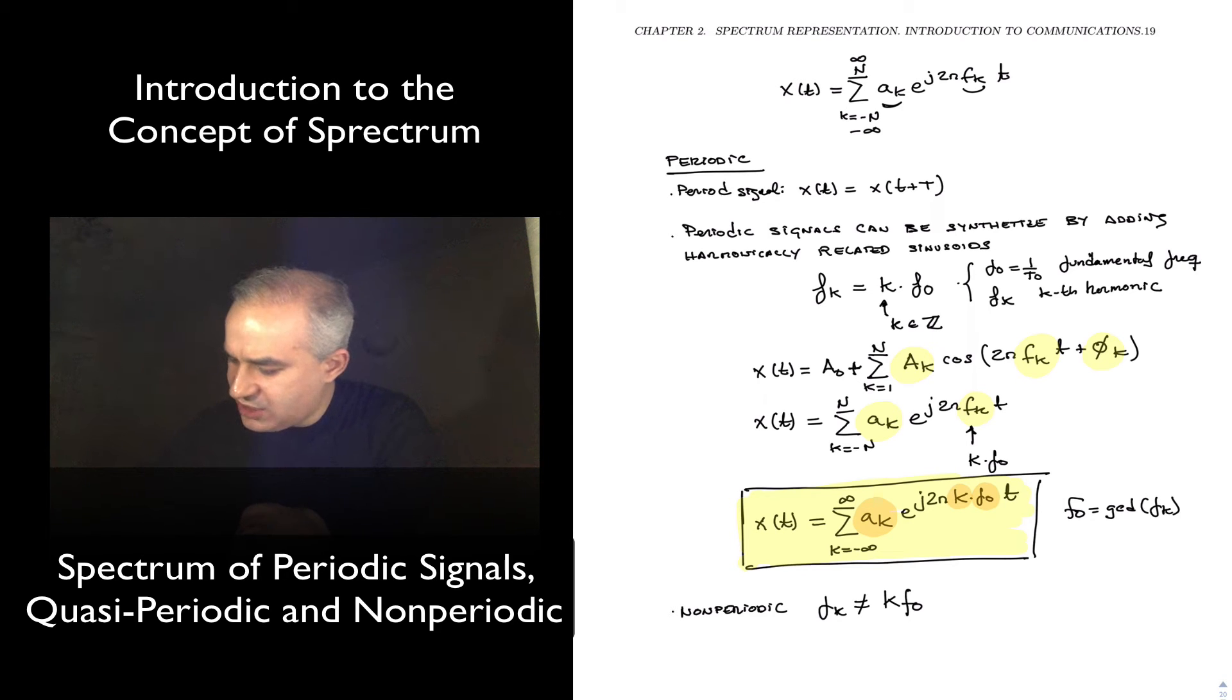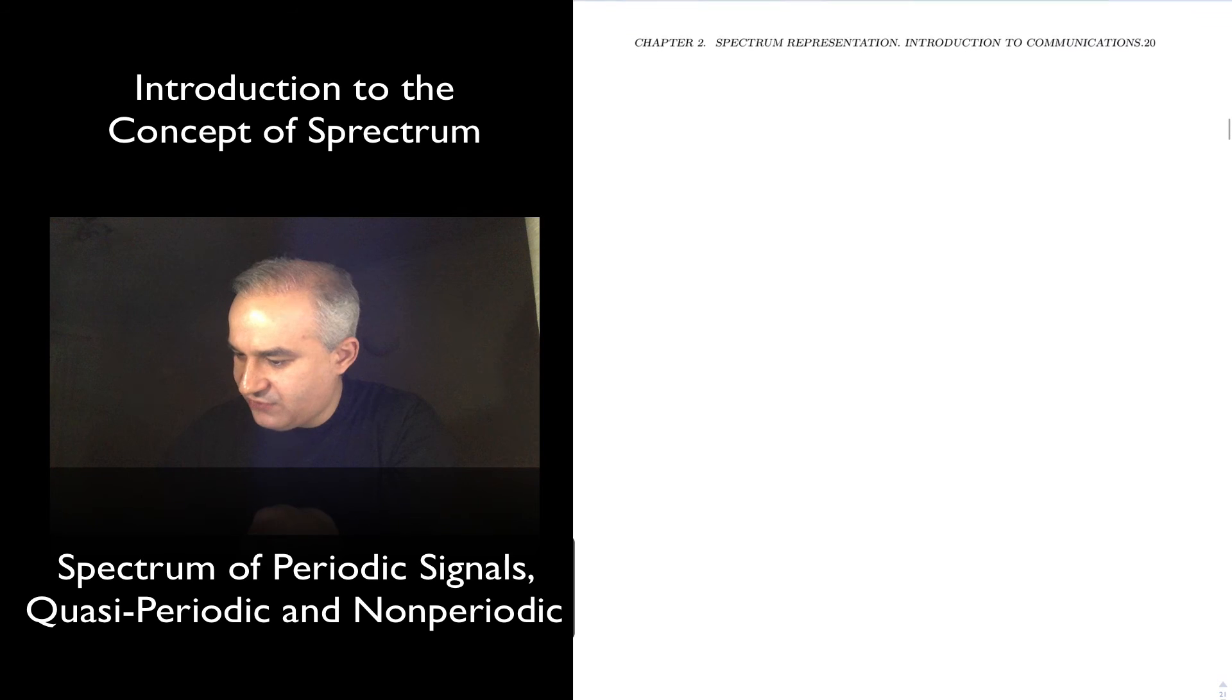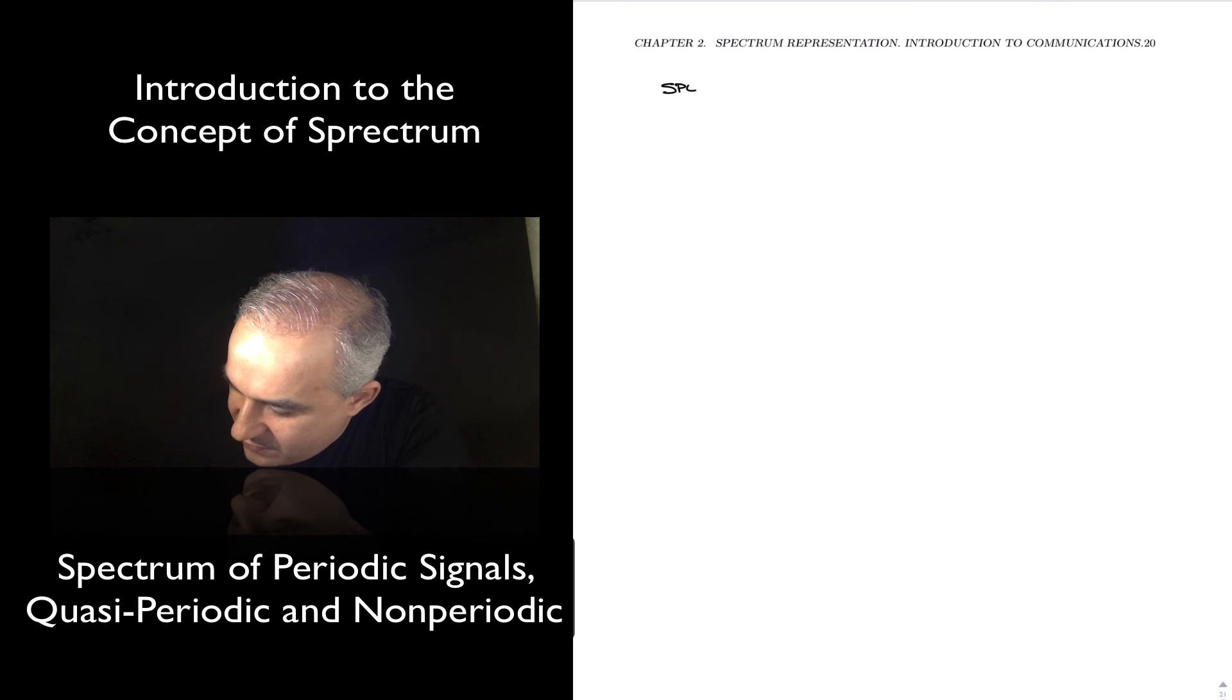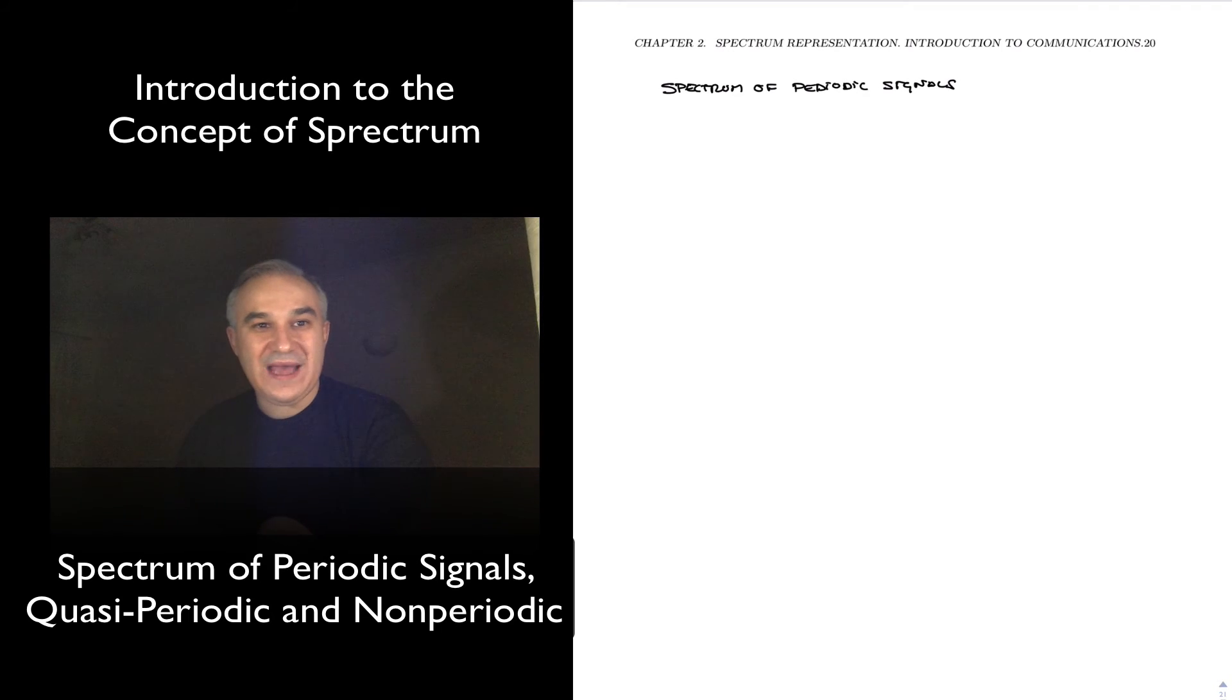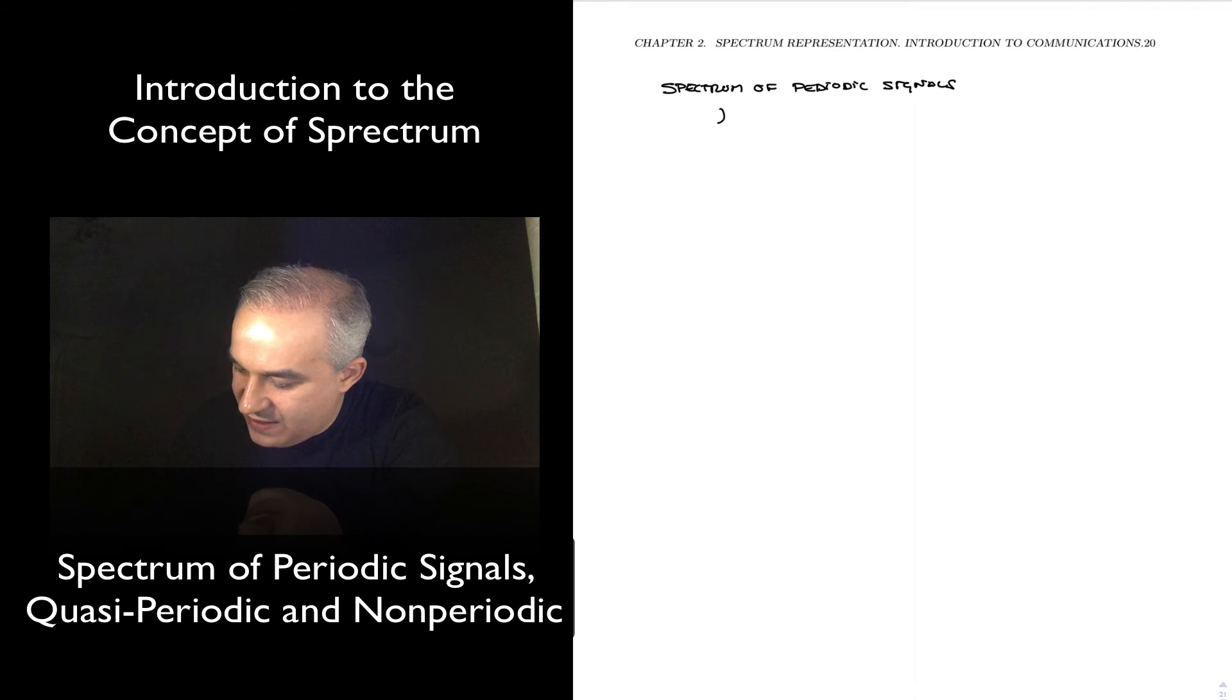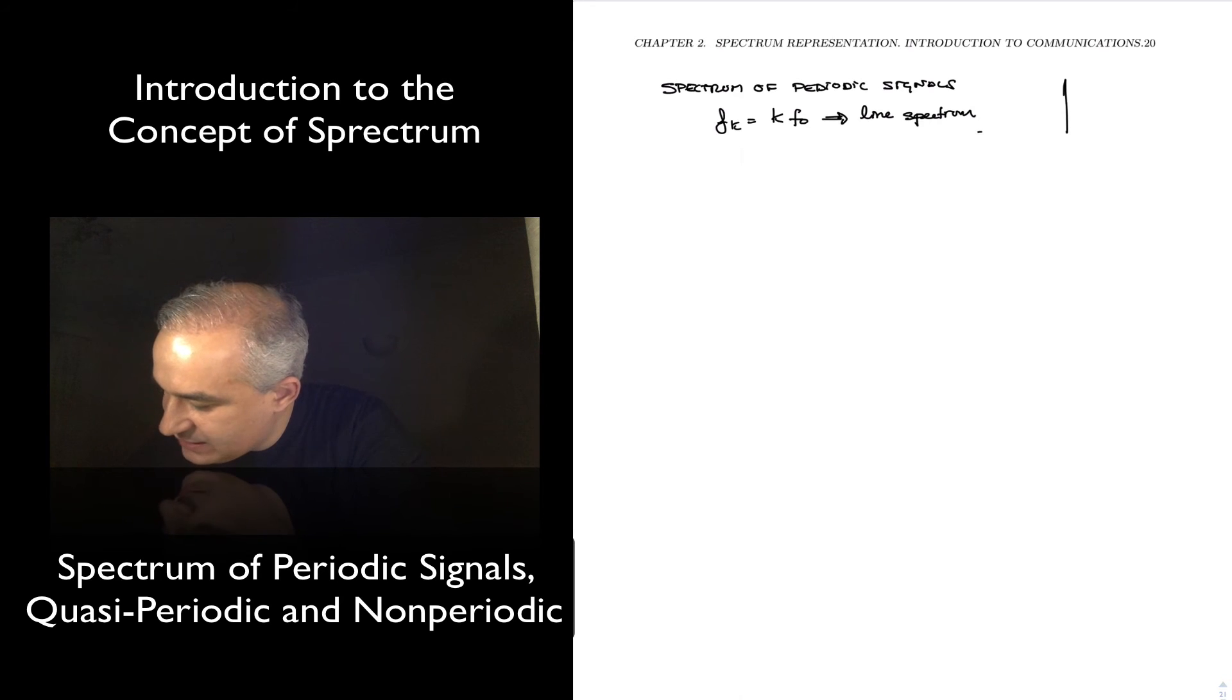Now, let's talk a little bit about the spectrum of signals in general. So the spectrum of periodic signals is going to be a line spectrum, meaning f_k equals k*f_0. If you do the spectral analysis, you will see spectral lines.